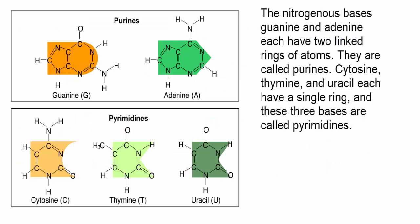The nitrogenous bases guanine and adenine each have two linked rings of atoms; they are called purines. Cytosine, thymine, and uracil each have a single ring, and these three bases are called pyrimidines.